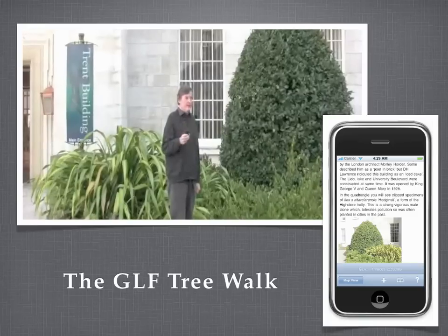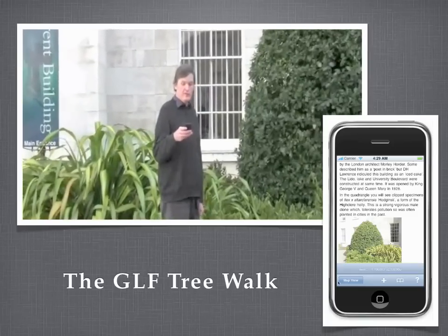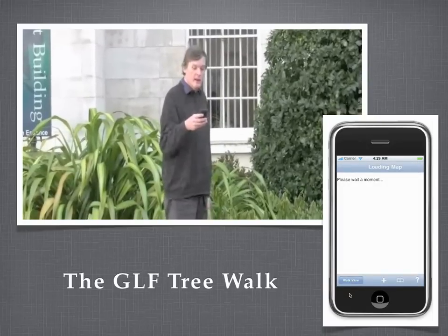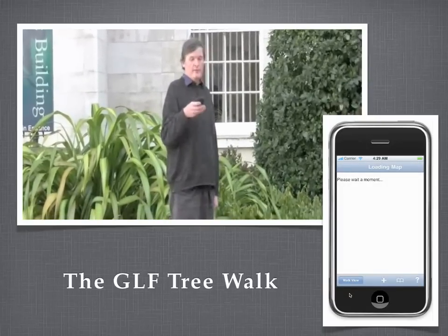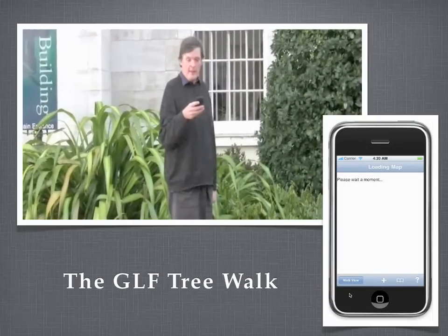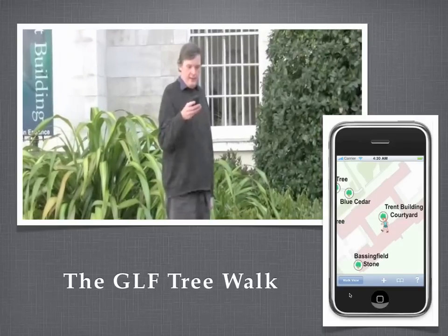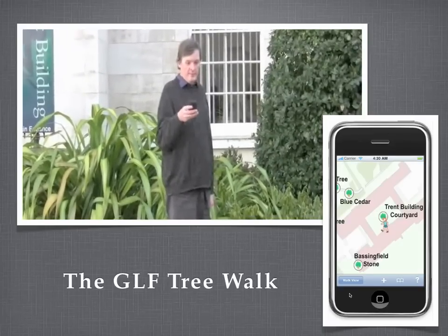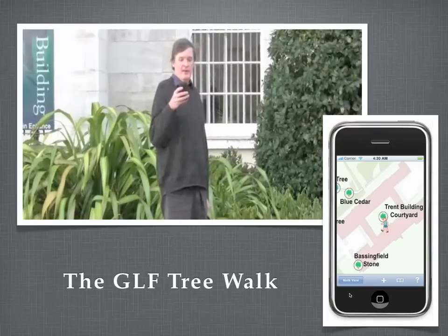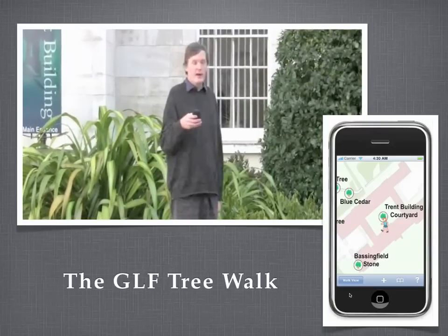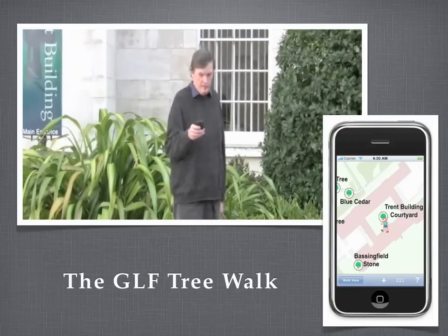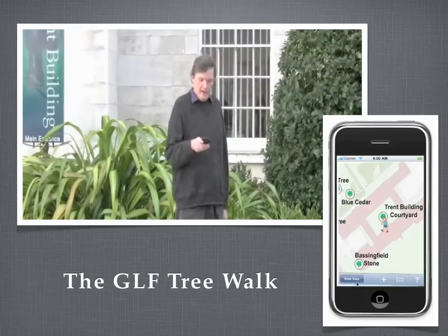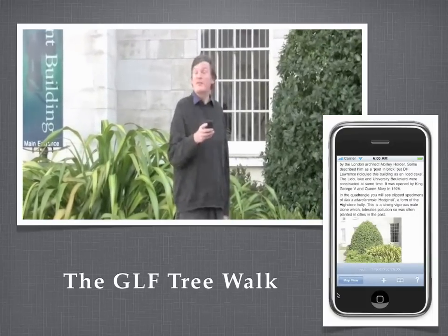Now it's not immediately obvious where we might want to go next, so we can switch over to the map view by pressing this button here. The little man icon in the middle represents where I am now, and the tree icons around are various points of interest. So let's go and see if we can find this one that's over here, which is the Basingfield Stone.